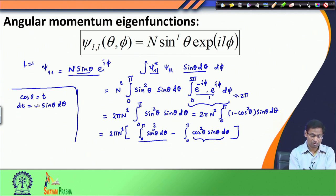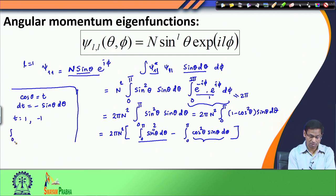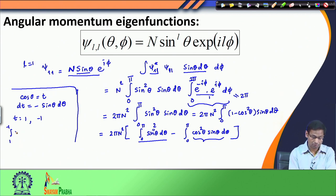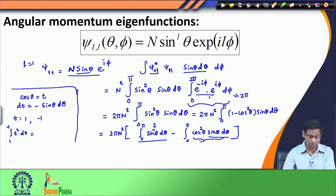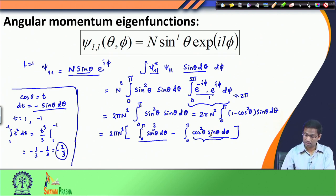When theta goes from 0 to pi, cos(theta) goes from cos(0) to cos(pi), so t goes from 1 to minus 1. The integral becomes the integral from 1 to minus 1 of t^2 dt, with the minus sign included. This gives t^3/3 evaluated from 1 to minus 1, which is minus 1/3 minus 1/3, giving minus 2/3.